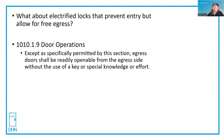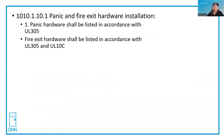Another example of a reference standard is under panic hardware and fire exit hardware, section 1010.1.10.1. Panic hardware shall be listed in accordance with UL 305, whereas fire exit hardware shall be listed in accordance with UL 305 for panic as well as UL 10C, which is the test standard for fire doors. You don't find UL 305 referenced under the lock set section. And if an AHJ asked you for documentation of a cylindrical lock listed to UL 305, you wouldn't find anybody that makes it — because UL 305 is the standard for panic hardware. So unless a standard is referenced by the code, it does not apply.